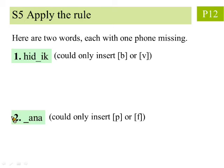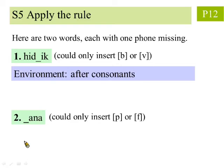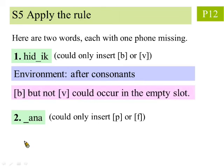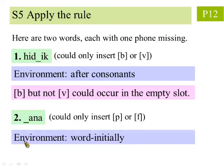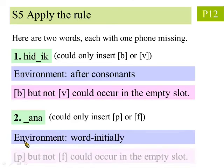In step 5, we apply the rules. Here are two words, each with one phone missing. The first can only insert b or v, and the second can only insert p or f. We observe that the sound environment on the line in the first word is after a consonant, and thus the sound b should be inserted. We also observe that the sound environment on the line in the second word is at the initial, and thus the sound p should be inserted.